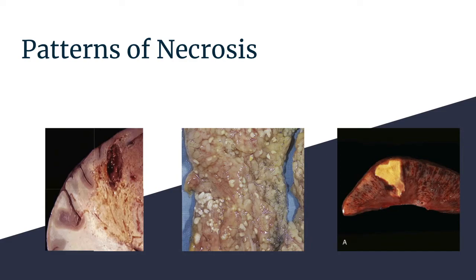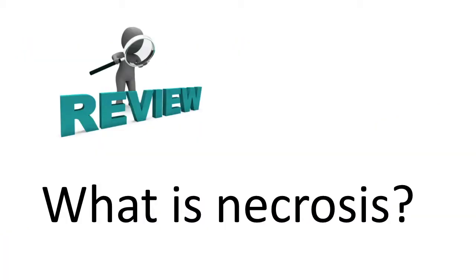In this video I'm going to cover the different types of necrosis, where each is commonly seen, and why they have different patterns of pathology. So just a quick review: what is necrosis? This is an accidental, unregulated, or pathological type of cell death due to some kind of irreversible injury or lethal change that has occurred to the cell that it cannot adapt to.